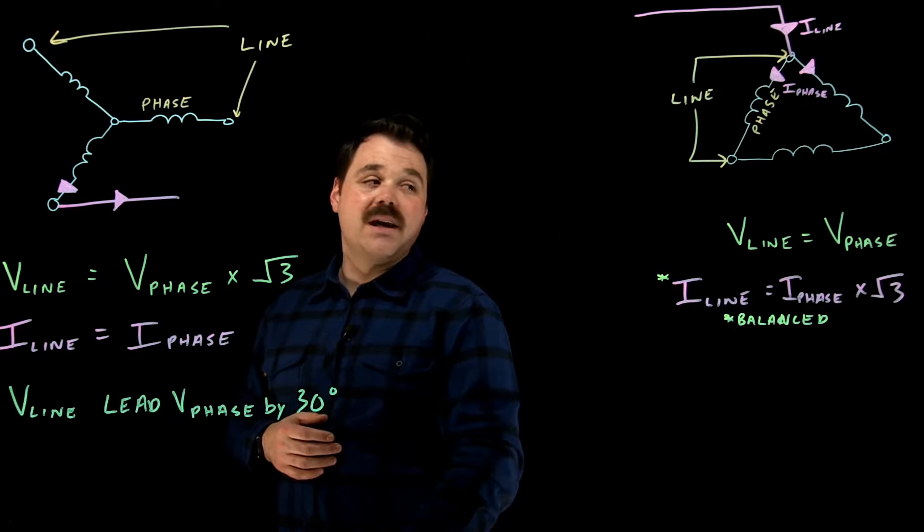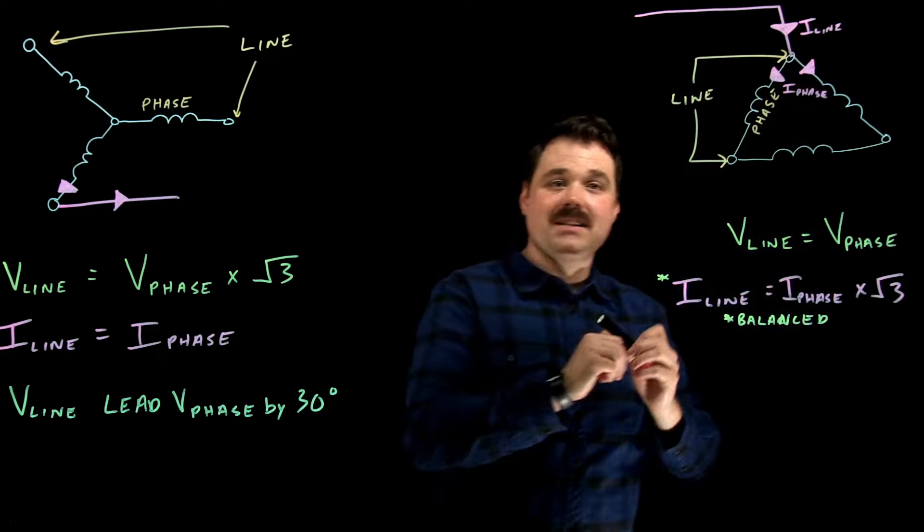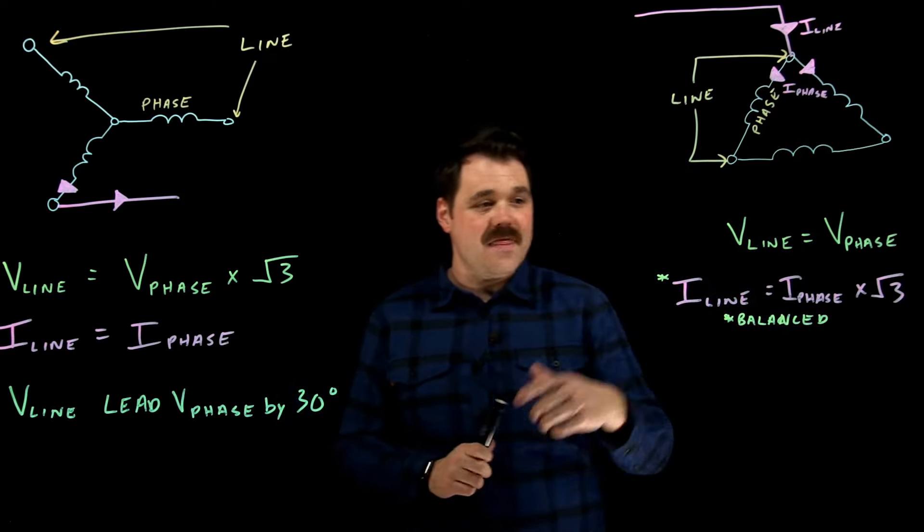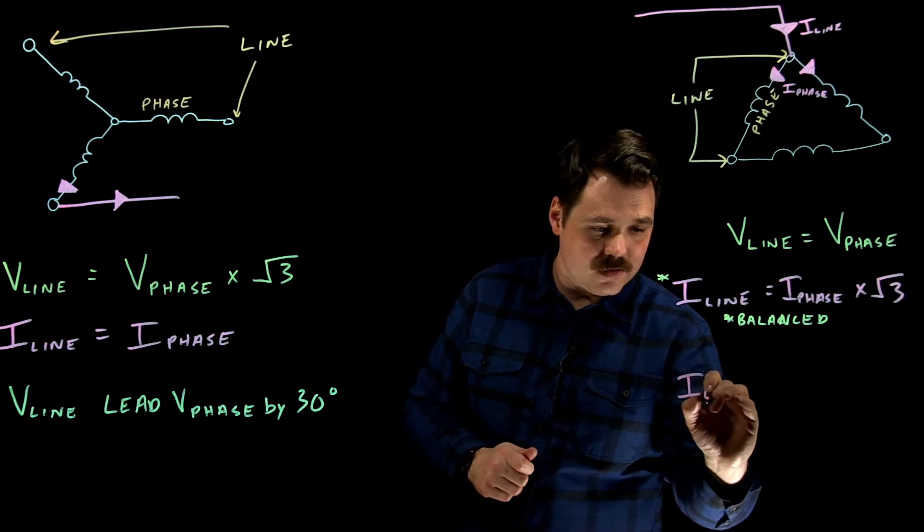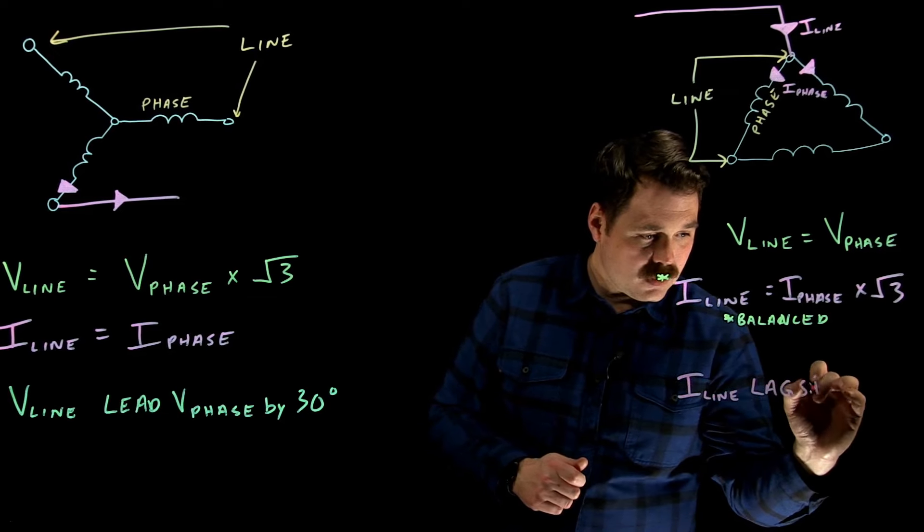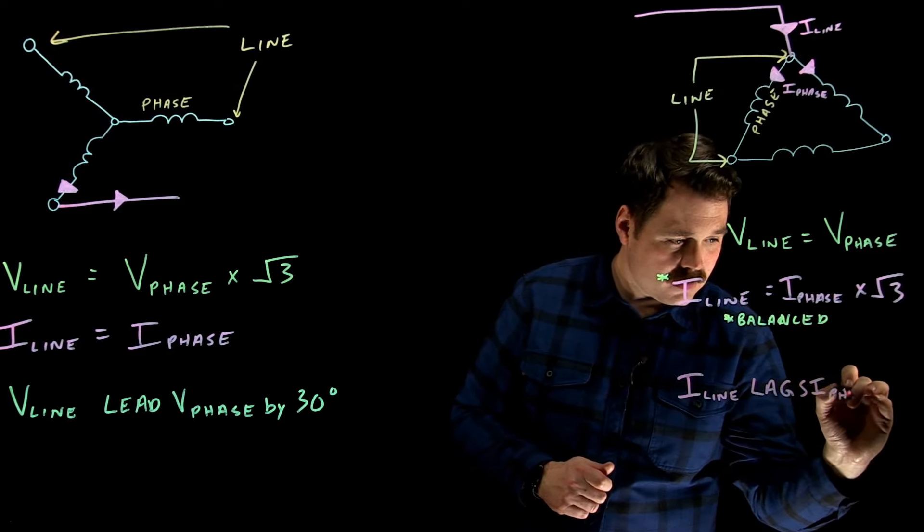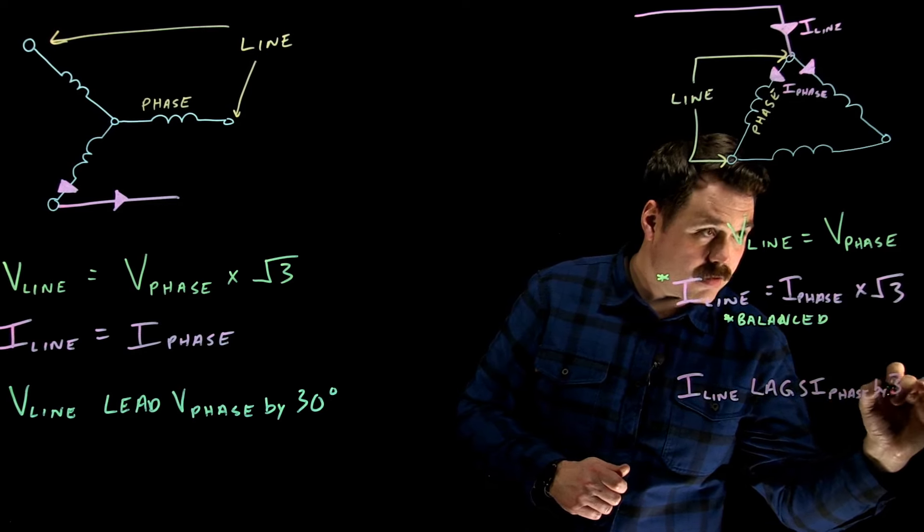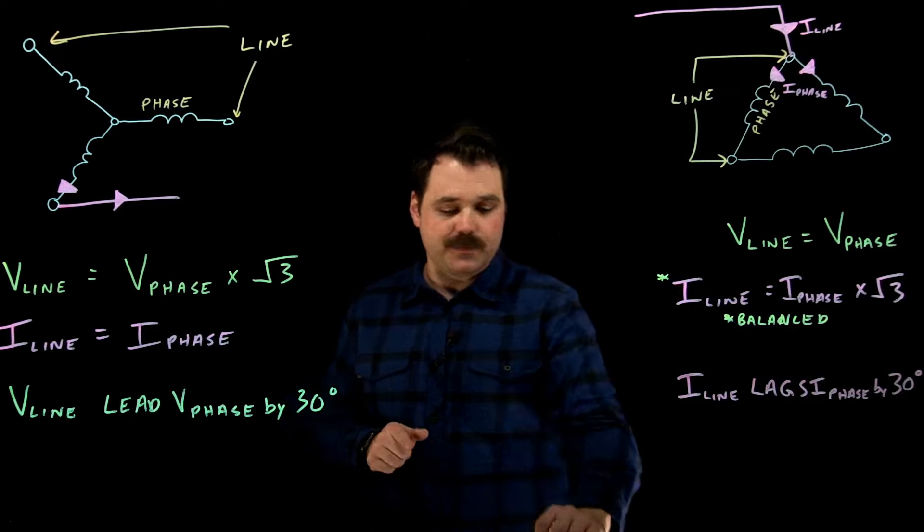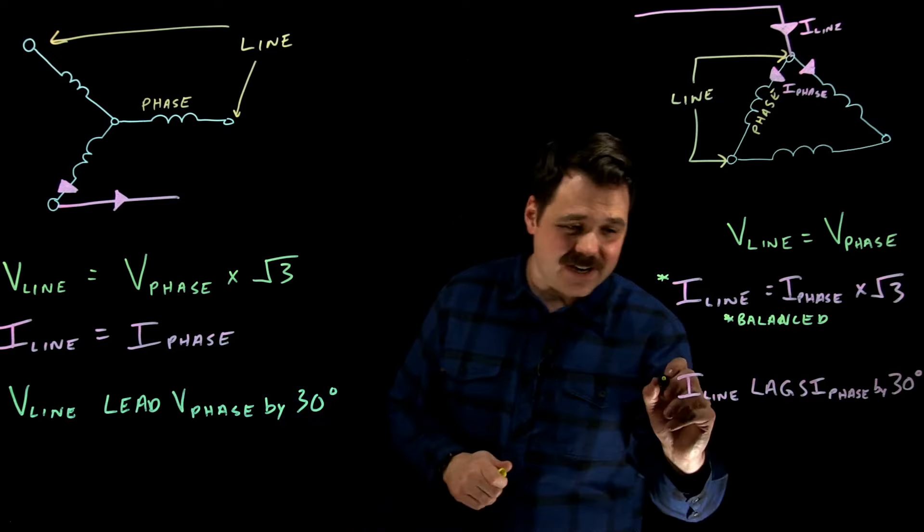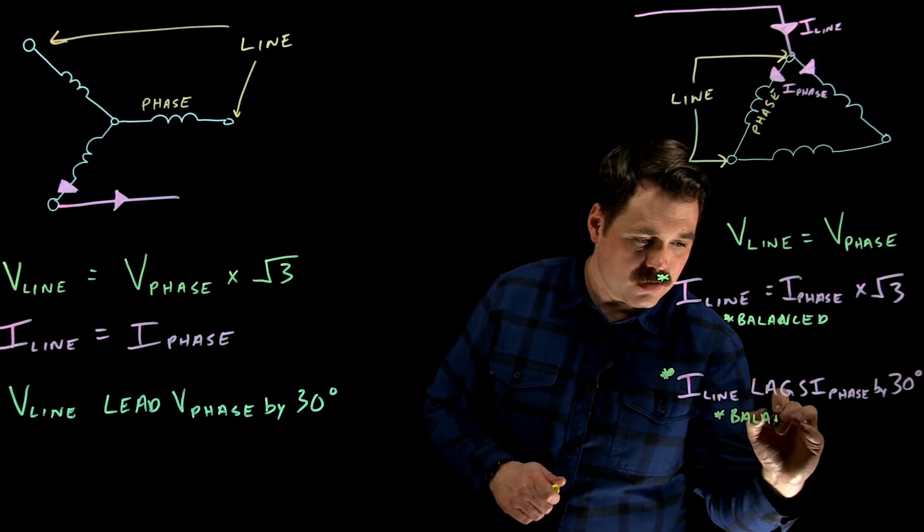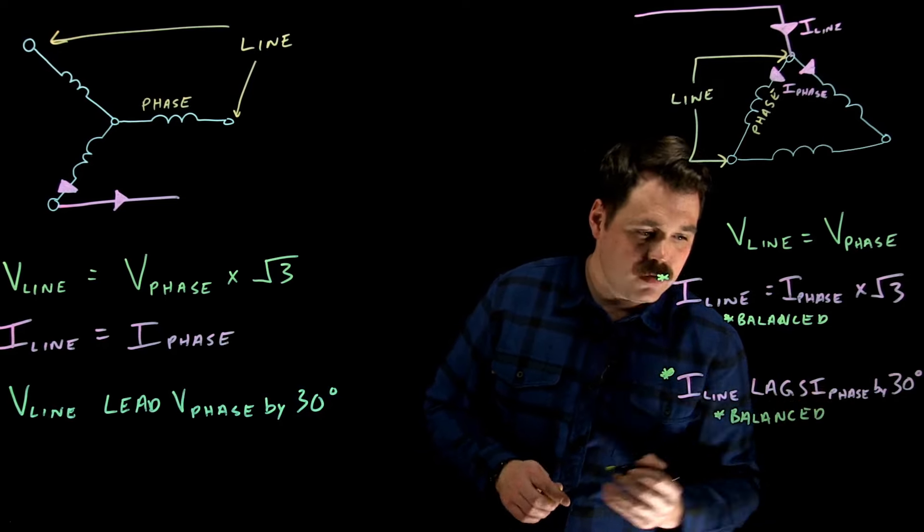Over here, because our voltage is the same in the line in the phase, we actually have two current phasors on our phasor diagram. And that relationship would be that I line lags I phase by 30 degrees on my phasor diagram. And again, one thing to keep in mind, that is only true in a balanced delta.